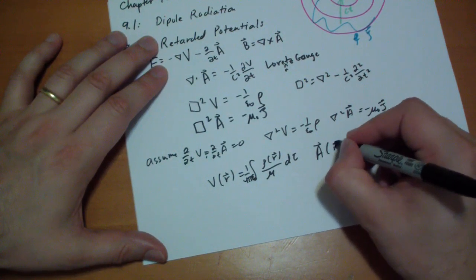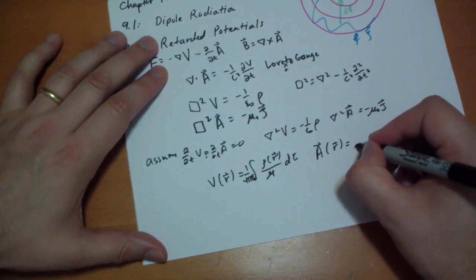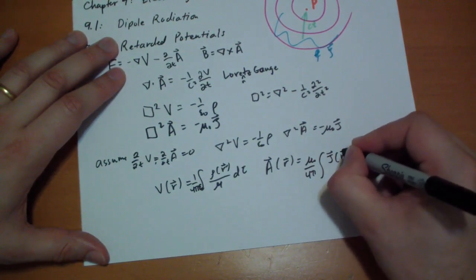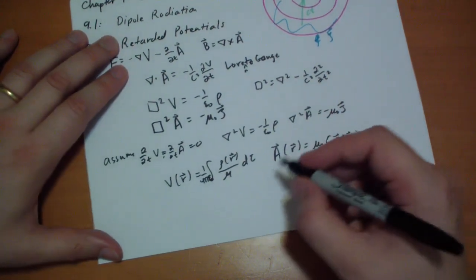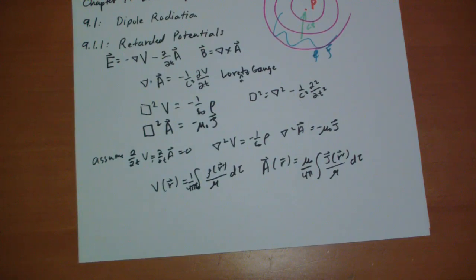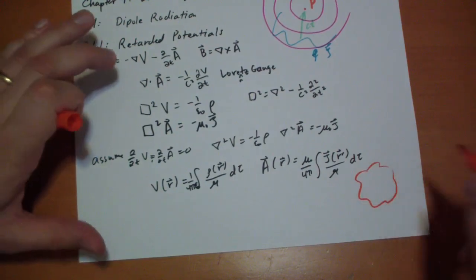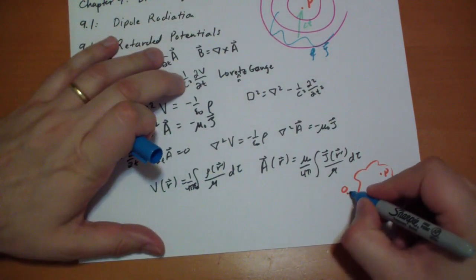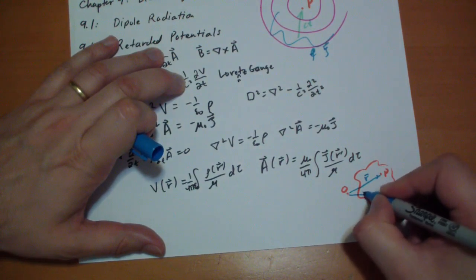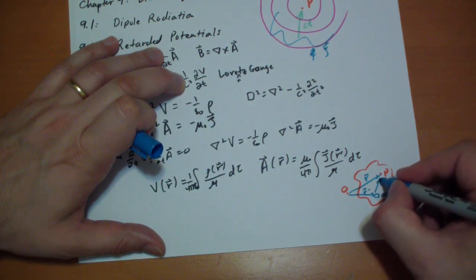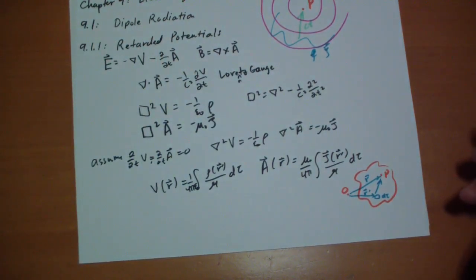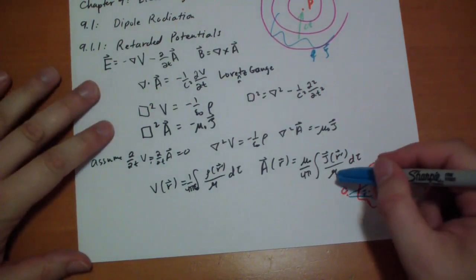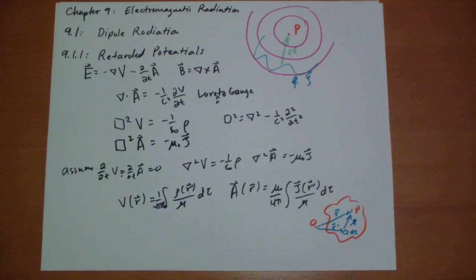And the A vector at R vector prime is equal to mu-naught over 4 pi of j vector at R prime over curly r, d tau. Let's draw this out so you can see what's going on here. We have stuff, and we have a point P that we're interested in. We have the origin, and our vectors look like this. We have the r vector points to the point. The r prime vector points to the d tau that we're integrating, and the curly r points from r prime to the point. This isn't the r vector, this is just the r distance, the distance between r and r prime.